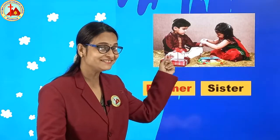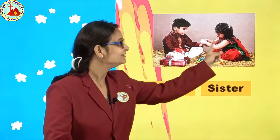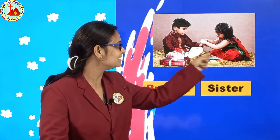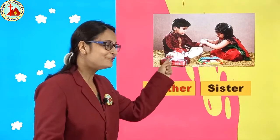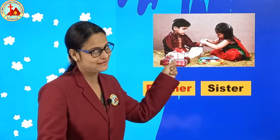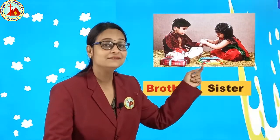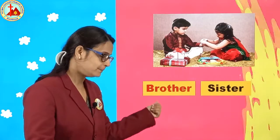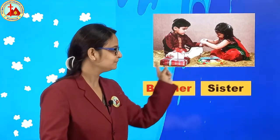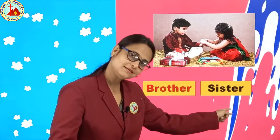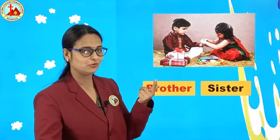Which picture is this? Brother, sister. See — this girl is tying Rakhi to her brother. So brother is masculine, sister is feminine. Brother, sister. Repeat after me: brother, sister. Let's see one more example.